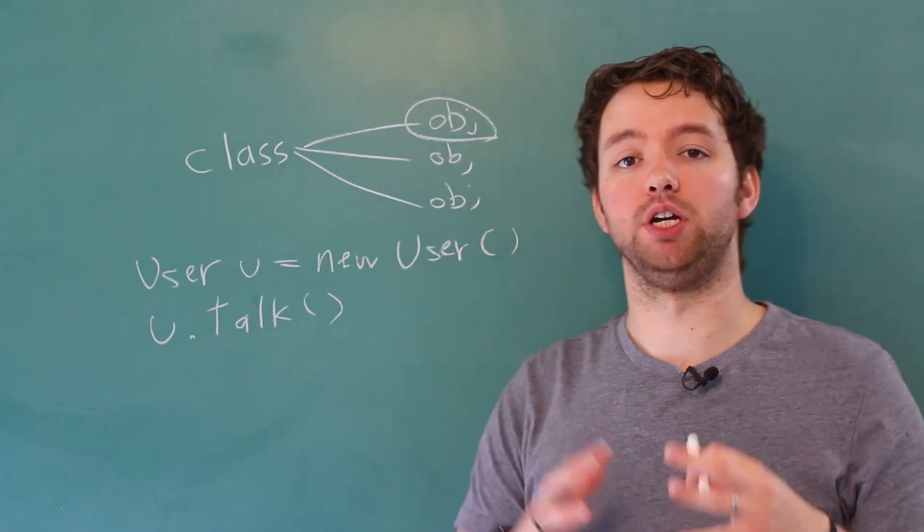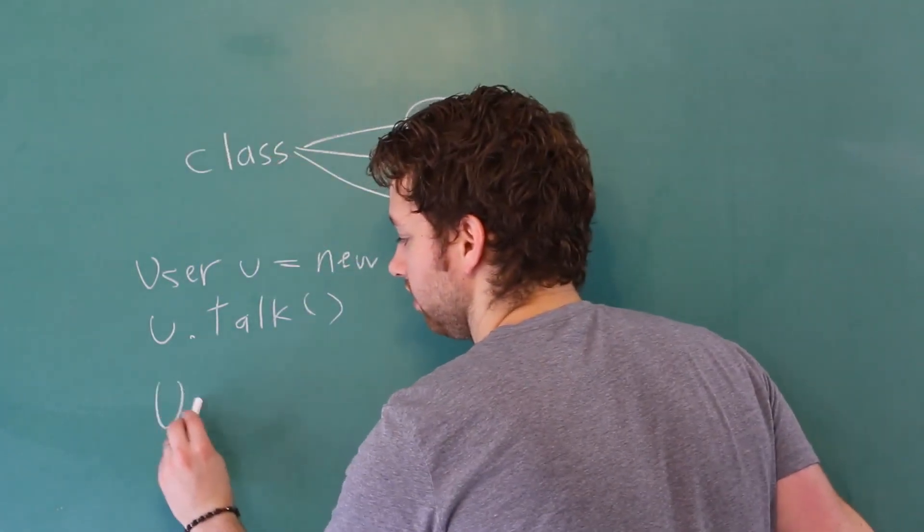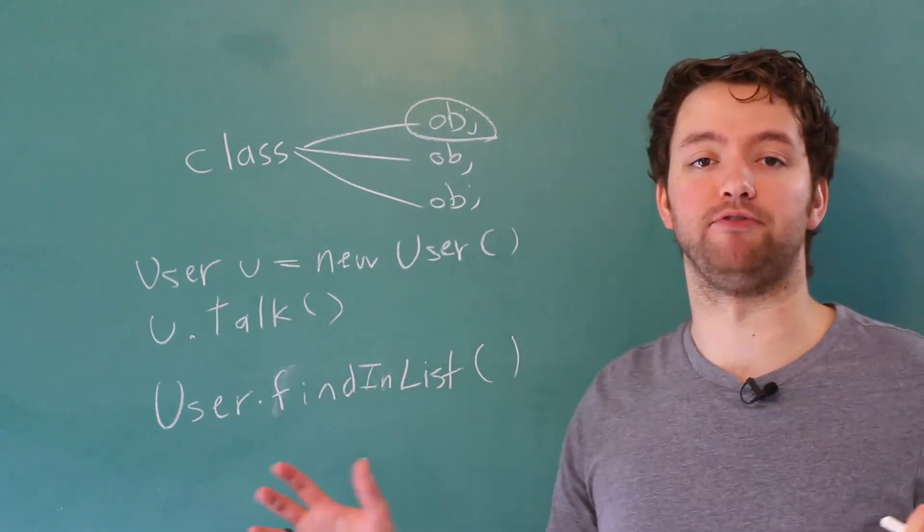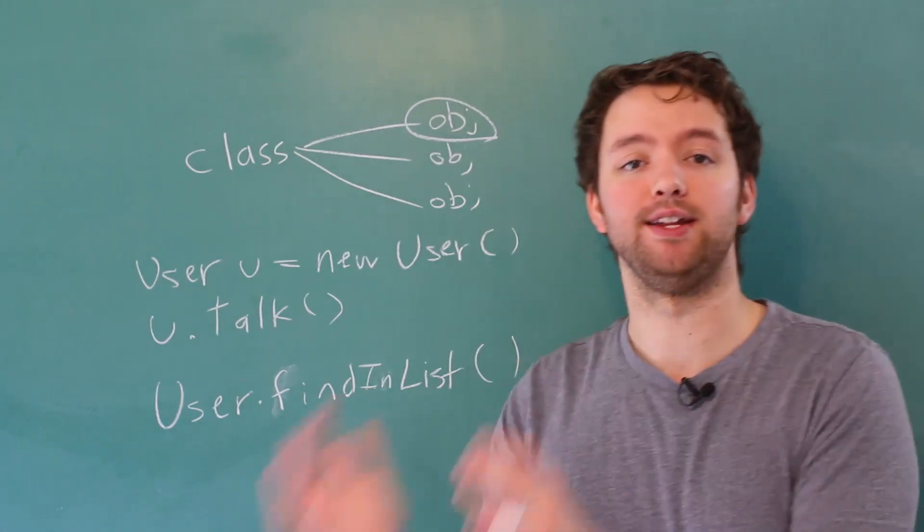A static method on the other hand would be on the class directly. So it would look like this where we say User the class dot and then put the method directly there. We don't have to do it on an instance. That is the difference between a static method and an instance method.